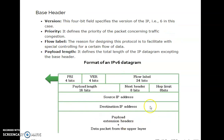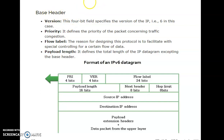The first field in the IPv6 packet format is the version, which is a 4-bit field defining that the packet belongs to IPv6. In this 4-bit field the value is set as 0110, which is equivalent to 6. The next field is priority, which is 4 bits. It defines the priority of the packet concerning traffic congestion. If all 4 bits are 0, the packet has low priority; if all bits are 1, the packet has high priority.